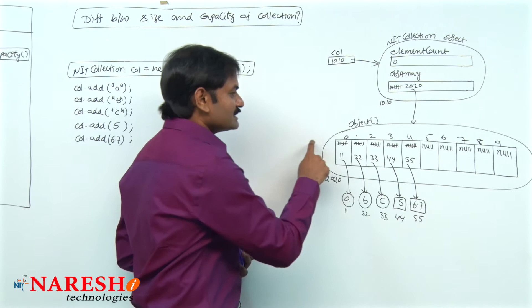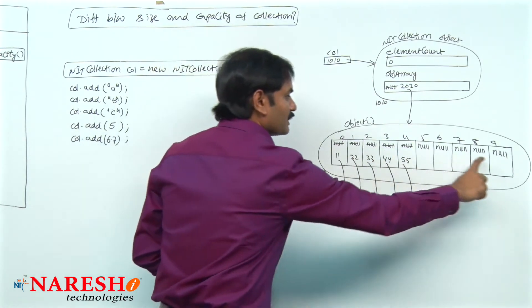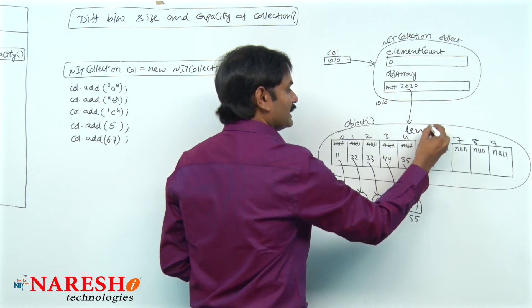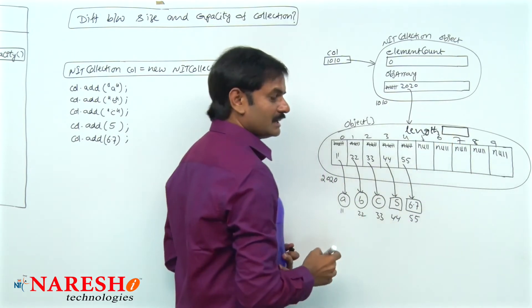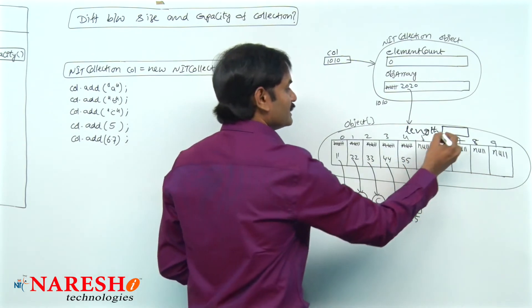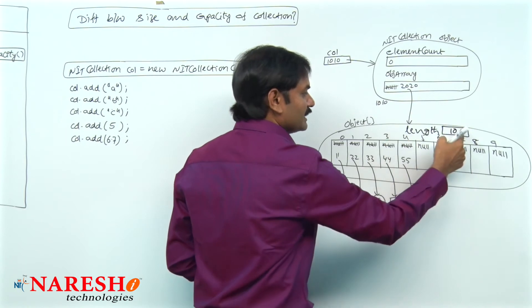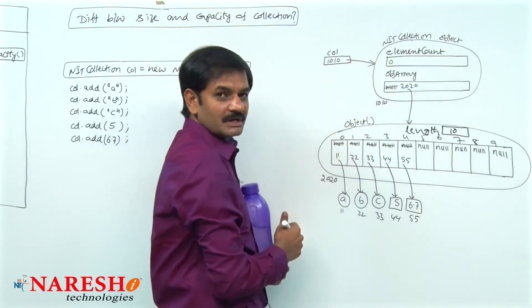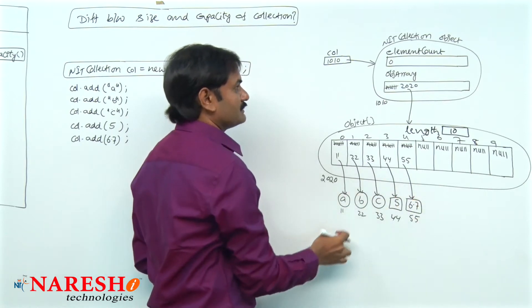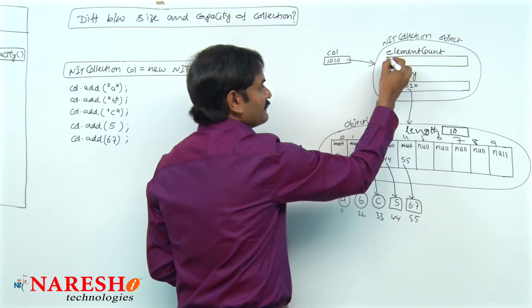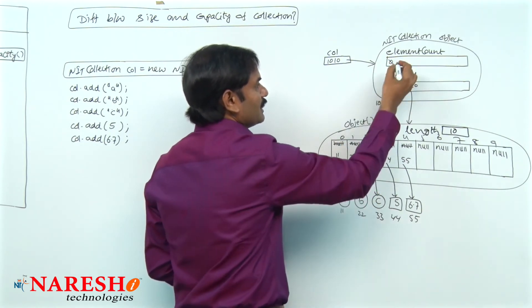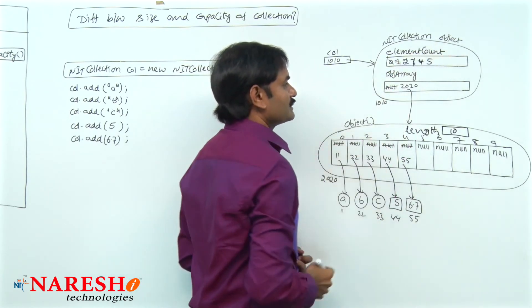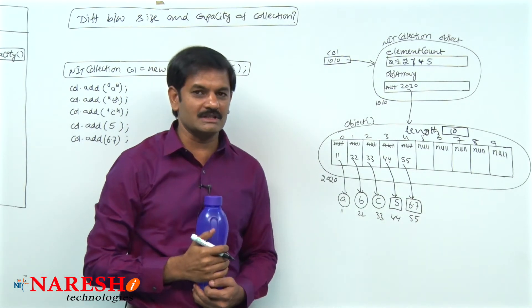To know the capacity of the array, consider the total number of elements. In the arrays chapter you may have learned that an array object background contains one variable called length. This length variable contains the information about the total capacity — in this case 10. In the NIT collection object we are maintaining a count of how many objects we have stored by using the elementCount variable. Every time we call the add method and store an object, we increase the count variable: elementCount 1, 2, 3, 4, and 5.